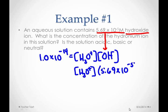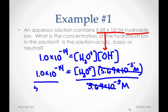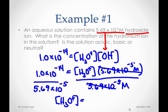So 5.69 times 10 to the negative 5th molar goes in for hydroxide. And then I'm just going to do some algebra and divide both sides by 5.69 times 10 to the negative 5th so that I can isolate the hydronium by itself. And so my hydronium ion concentration, when I plug those numbers into my calculator and divide, ends up being 1.76 times 10 to the negative 10th molar.